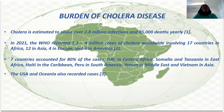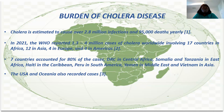Cholera is one of the diseases that has affected so many people. It was estimated that 2.8 million infections happen yearly with 95,000 deaths every year. In 2021, WHO reported 1.3 to 4 million cases of cholera worldwide, involving 17 countries in Africa. Seven out of those 17 countries contribute to 80% of the cholera cases — one from Central Africa, one from East Africa, then South America, the Middle East, and Asia as well.